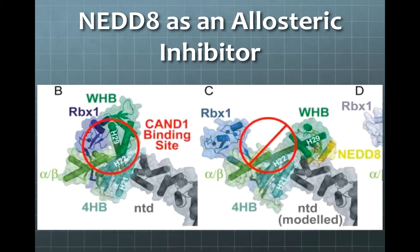But how does NEDD8 accomplish this activation of ubiquitylation? Under normal circumstances, an inhibitor called CAND1 binds to the E3 complex to disrupt ubiquitylation. But when NEDD8 is bound to the E3 complex, a conformational change occurs and the CAND1 binding site is eliminated. With CAND1 unable to bind, ubiquitylation occurs at a much higher rate.